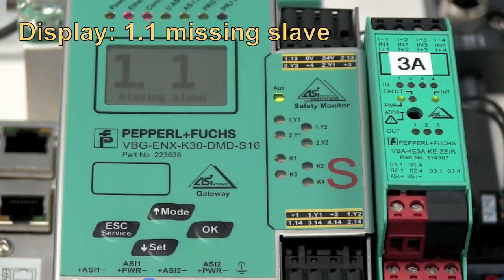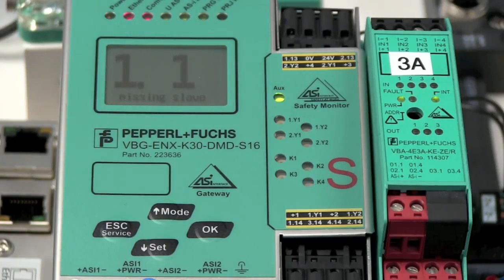On the display, you see that slave 1 on network 1 is missing. The replacement procedure for this device is a little different and actually a little nicer because of the display.